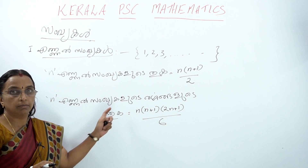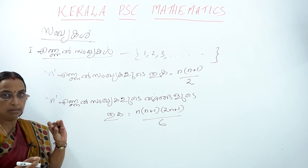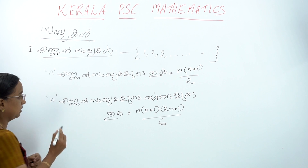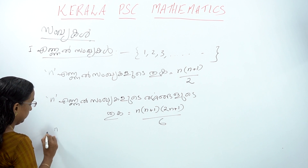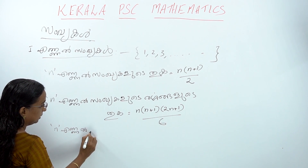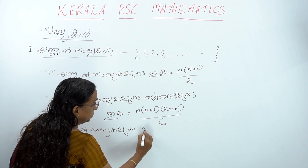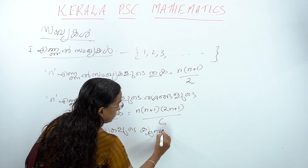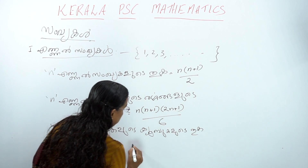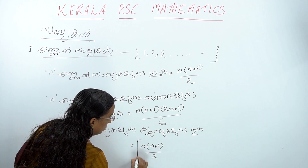The formula n(n+1)(2n+1)/6. Now, if you are talking about these questions, this is how to do it. Let's do this: n(n+1)/2, and n(n+1)/2 whole square.